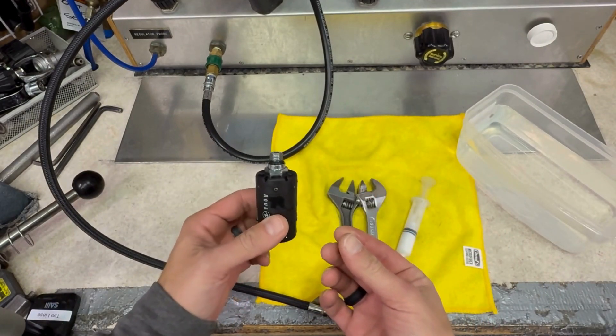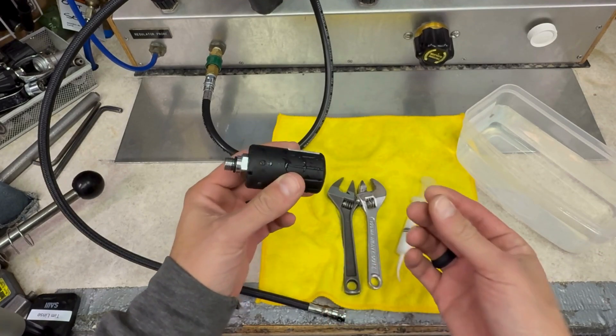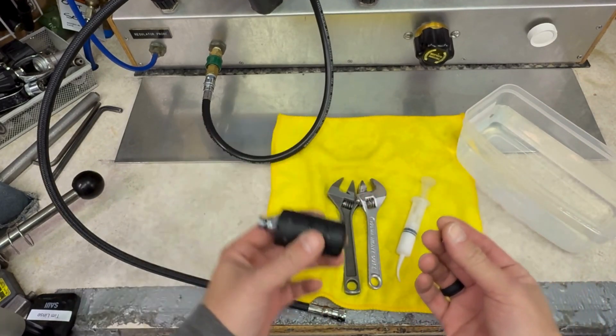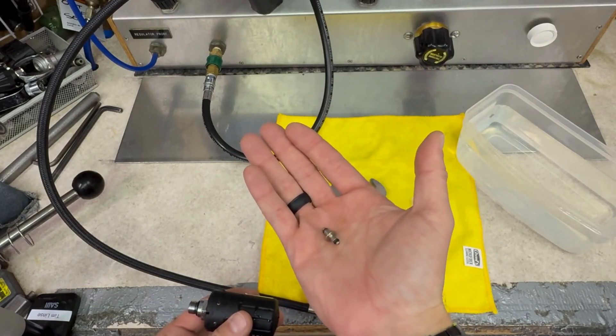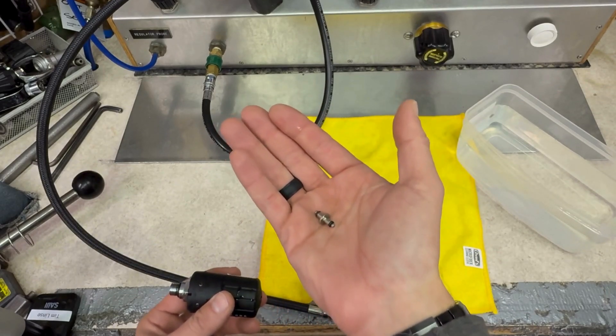This is most commonly seen when we take a transmitter that was originally plugged right into a first-stage and then put it on a hose. The diver didn't realize that they needed a high-pressure spool.